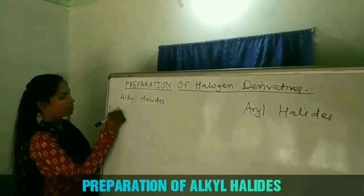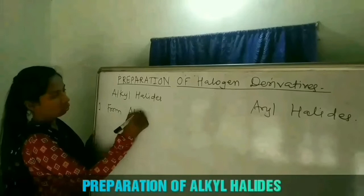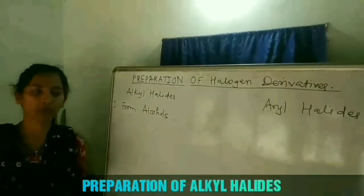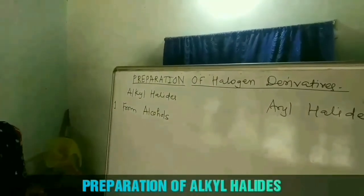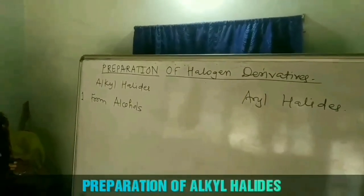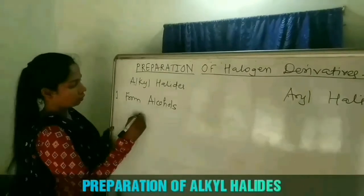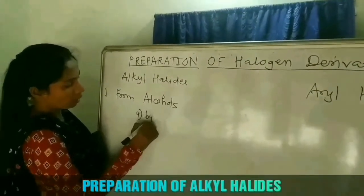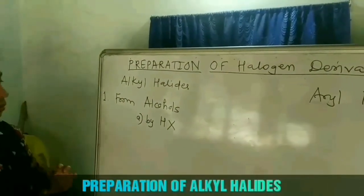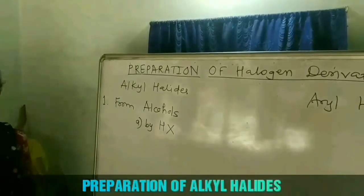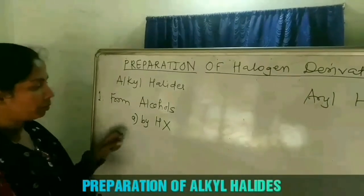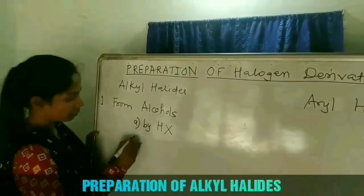The first preparation method is from alcohols. Alcohols can be converted into alkyl halides by replacing the OH group from the alcohol by the corresponding halogen. There are three different ways for converting alcohols to alkyl halides. The first is by using any haloacid — a haloacid is an acid in which a halogen is present, like HCl, HBr, or HI.